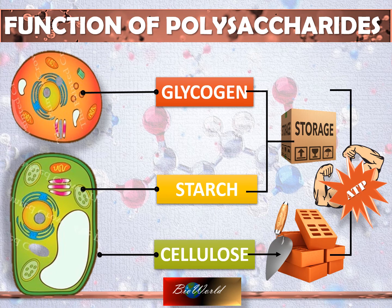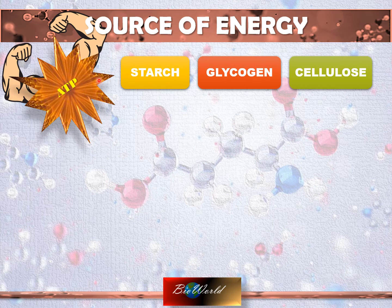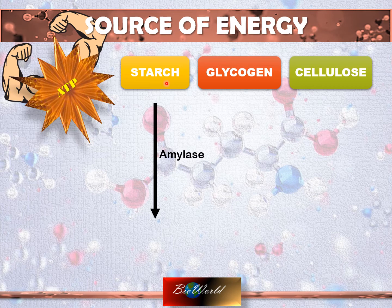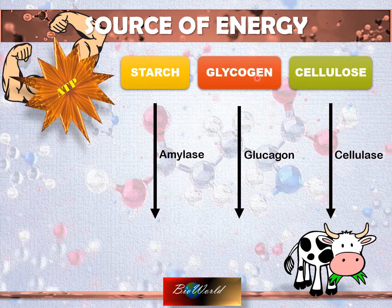All three polysaccharides can be a source of energy. However, they are not a direct source of energy because they have to be broken down into a monosaccharide. Starch, for example, will be broken down by the enzyme amylase. Amylase can hydrolyze the alpha-1,4 glycosidic bond as well as the alpha-1,6 glycosidic bond. Glycogen found in animal cells uses a different pathway that is stimulated by the hormone glucagon. Glucagon will activate a series of enzymes that will help break down glycogen into glucose.